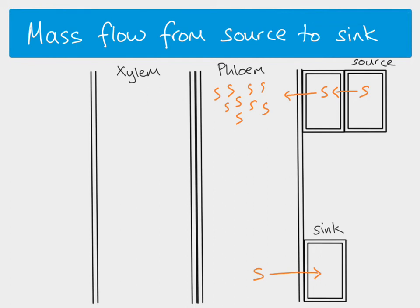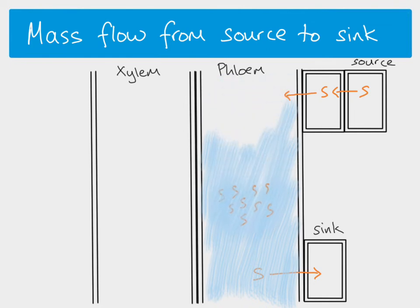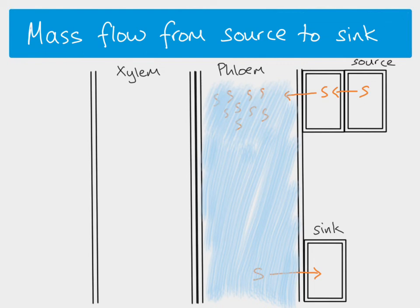It is not moving by diffusion — the process is too fast for diffusion. What we actually have is mass flow. The phloem contains phloem sap: sucrose is a solute dissolved in water. The whole phloem has sap — water with dissolved solutes and hormones. Mass flow refers to the movement of the entire packet of water with its dissolved solutes together down the phloem.